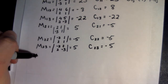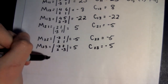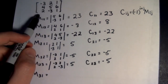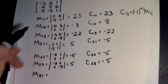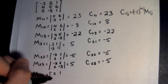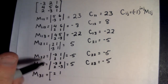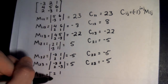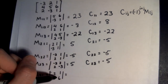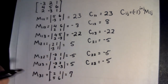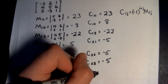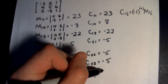Continuing, we have the third row to deal with. For M31, we get rid of the third row and first column, giving us 2, 1, 5, 6. The determinant is 12 minus 5, which is 7. The cofactor C31 won't change because 3 plus 1 is 4, an even number, so that stays 7.